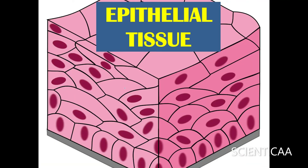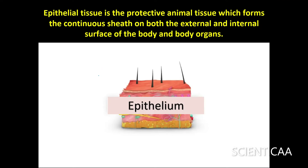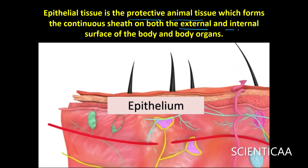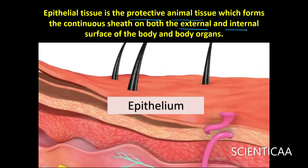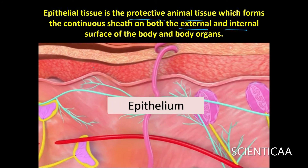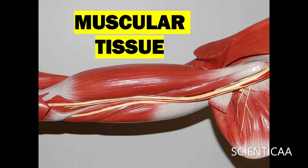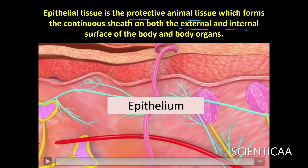The first tissue present in the human body is the epithelial tissue. Epithelial tissue is a protective animal tissue that forms a continuous sheath on both the external and internal surfaces of the body. Epithelial cells serve as a barrier between the inside and outside of the body and also protect us from various microorganisms.